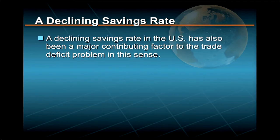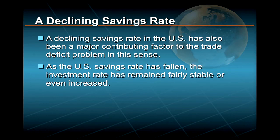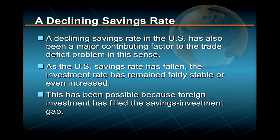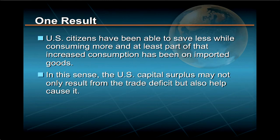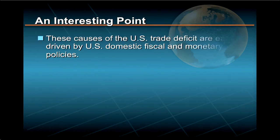A declining savings rate in the U.S. has also been a major contributing factor to the trade deficit problem. As the U.S. savings rate has fallen, the investment rate has remained fairly stable or even increased. This has been possible because foreign investment has filled the savings-investment gap. As a result, U.S. citizens have been able to save less while consuming more, and at least part of that increased consumption has been on imported goods. In this sense, the U.S. capital surplus may not only result from the trade deficit, but also help cause it.